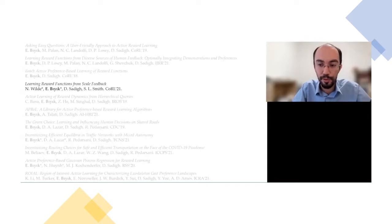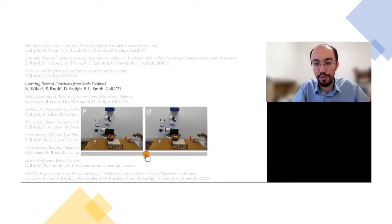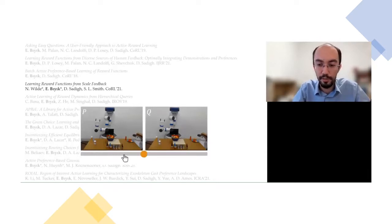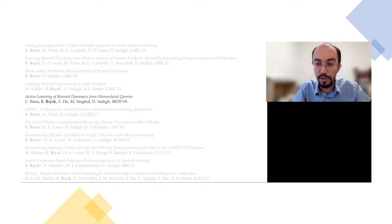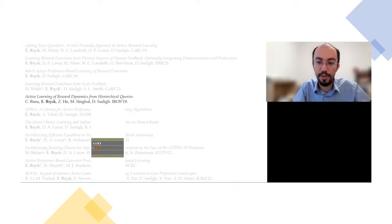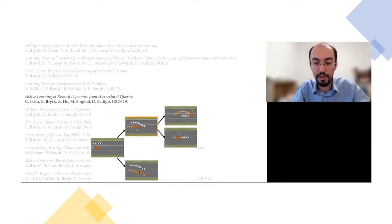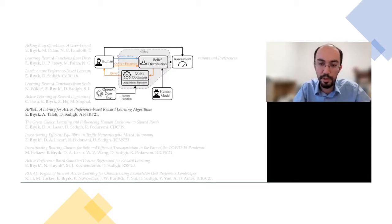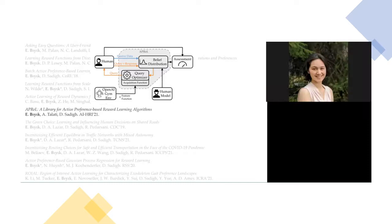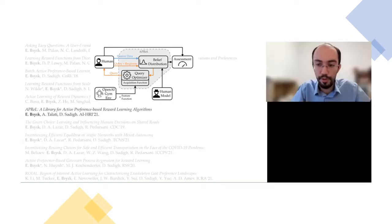We then focused on richer forms of comparative feedback. For example, we proposed scale feedback to allow users to indicate how much they prefer one trajectory over the other — this enabled faster learning because responses contain more information. Another form we looked at is hierarchical queries, where we start from an initial state, ask a comparison question, and let the next question start from the state the user selected, capturing some non-stationarities in the reward functions. Very recently, we released a Python library that allows playing with many of these features — different feedback types, active learning optimizations, batch methods, etc.